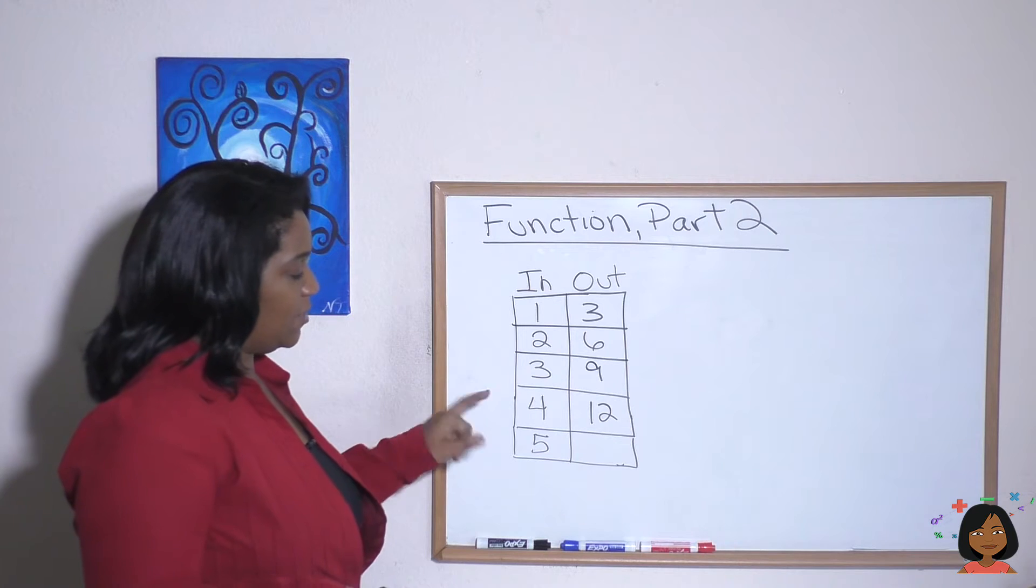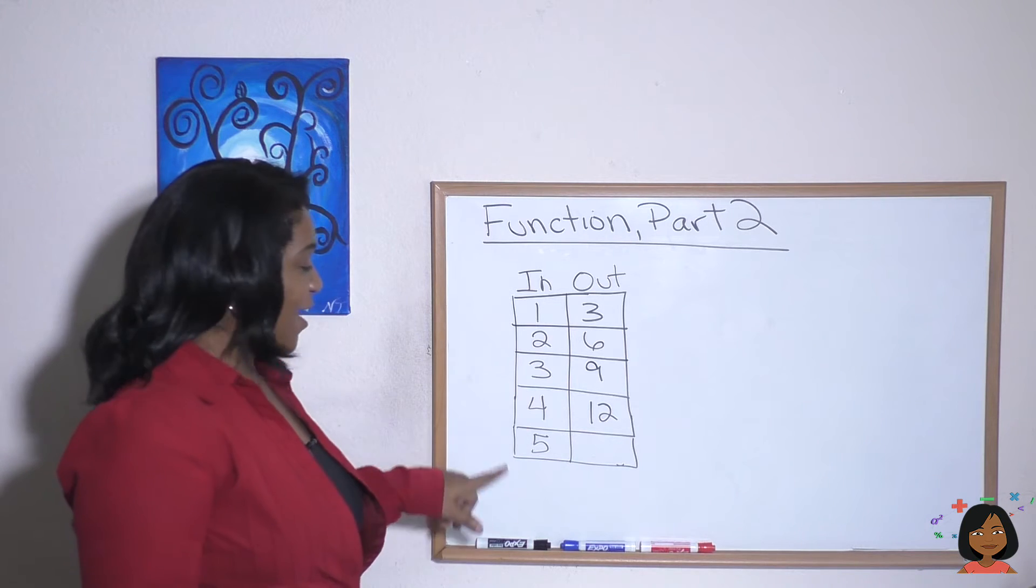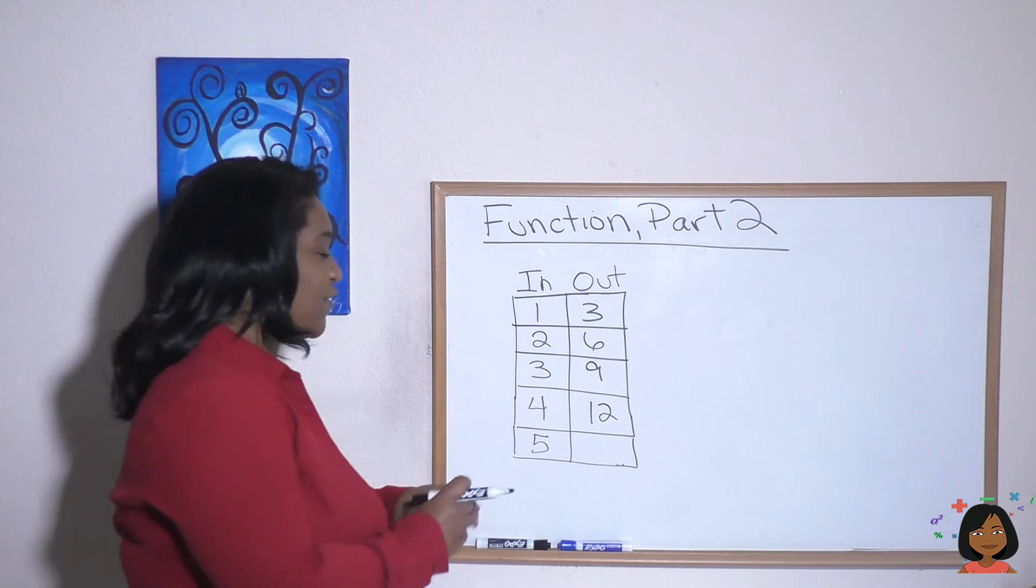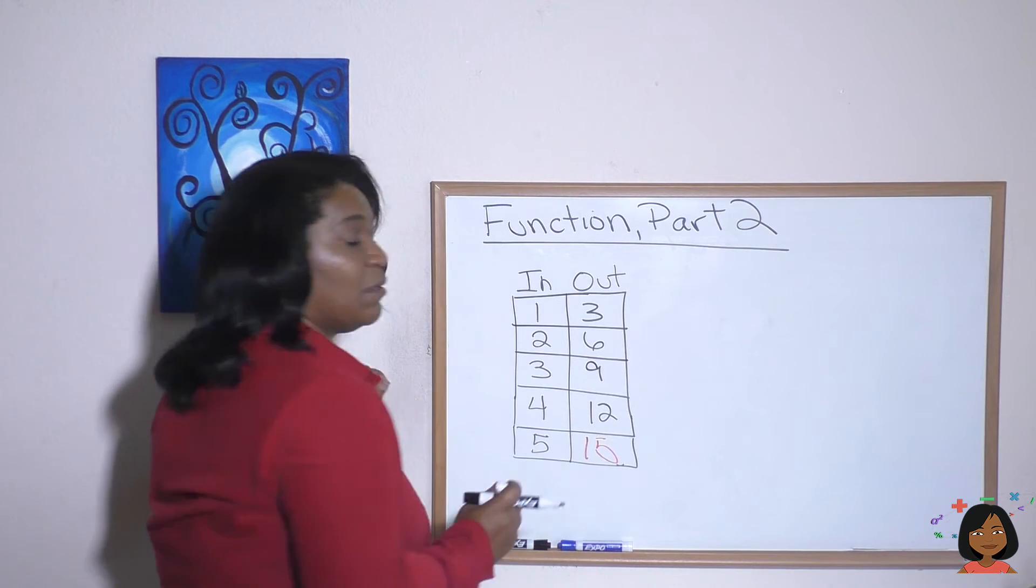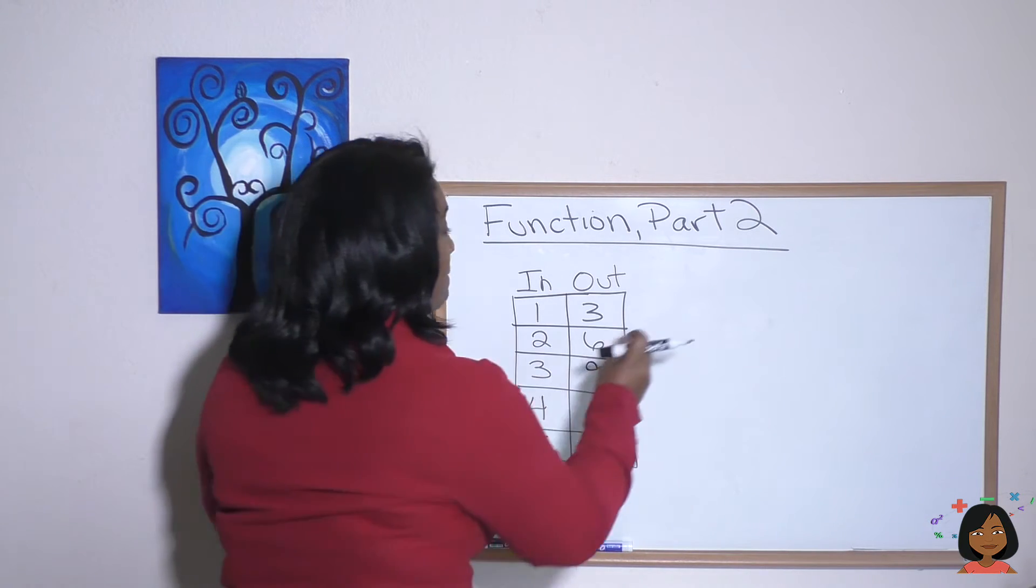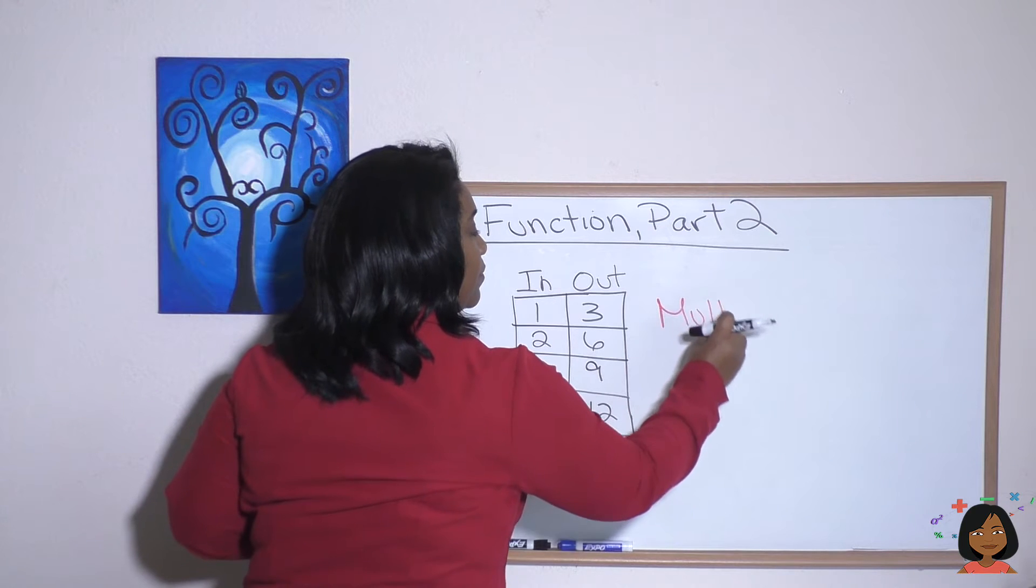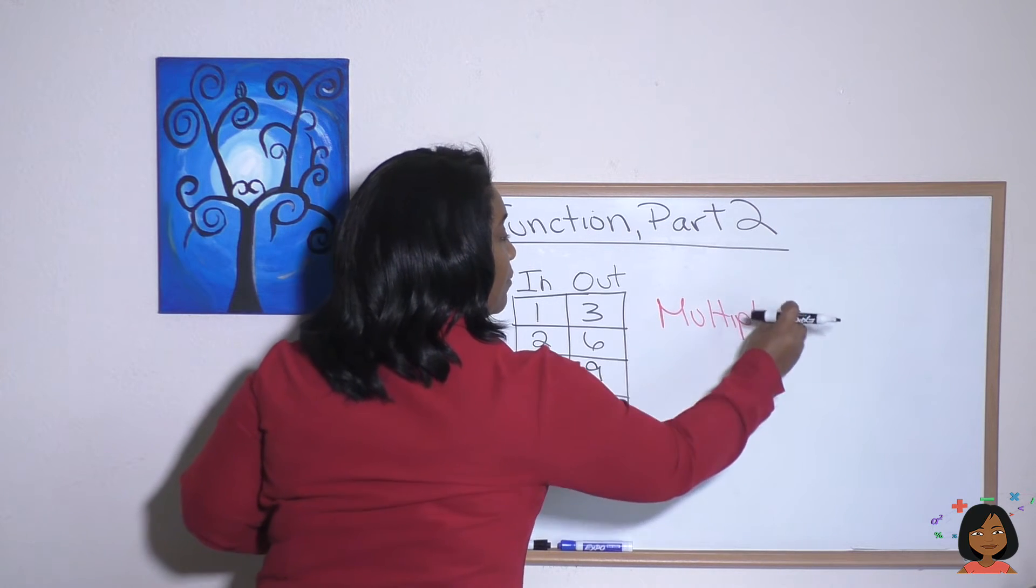Let's see if that fits the rest of them. Three times three is nine. Four times three is twelve. And five times three is fifteen. So what is the rule? The rule here is multiply by three.